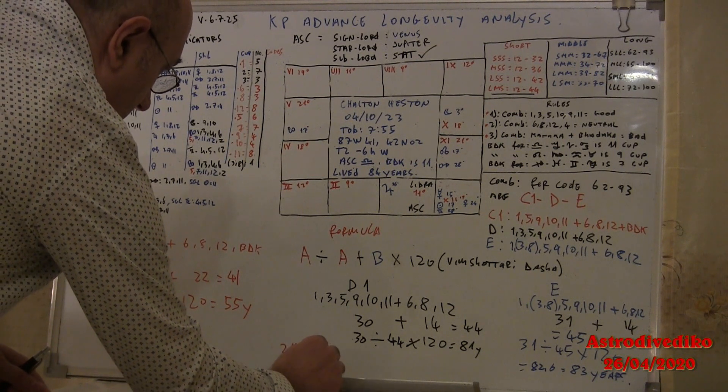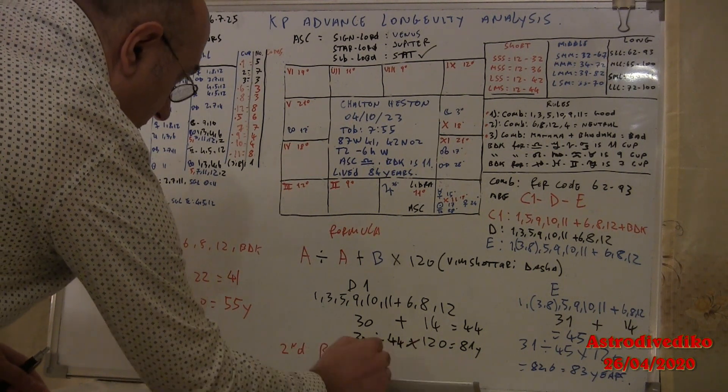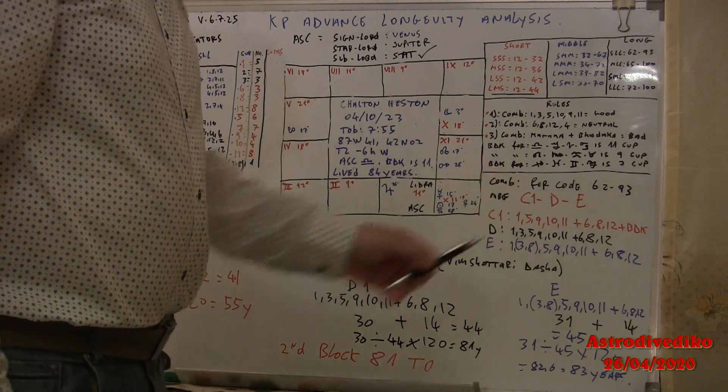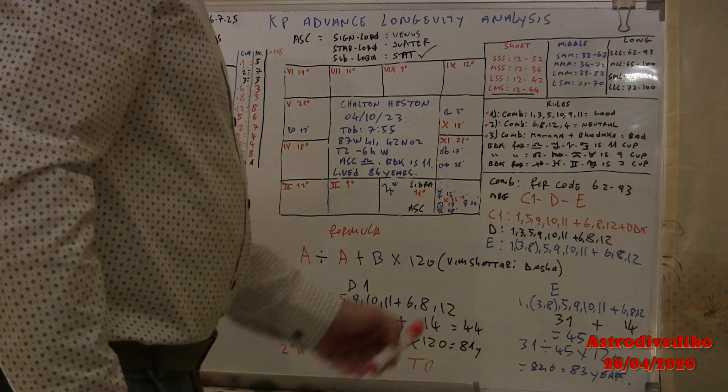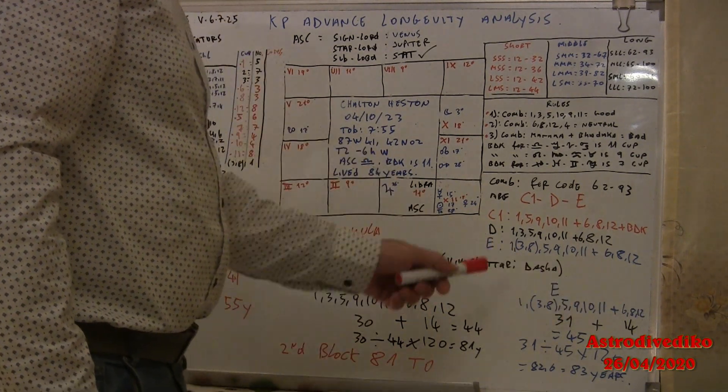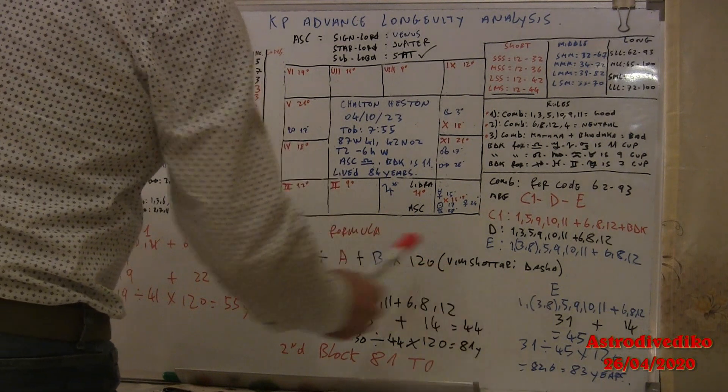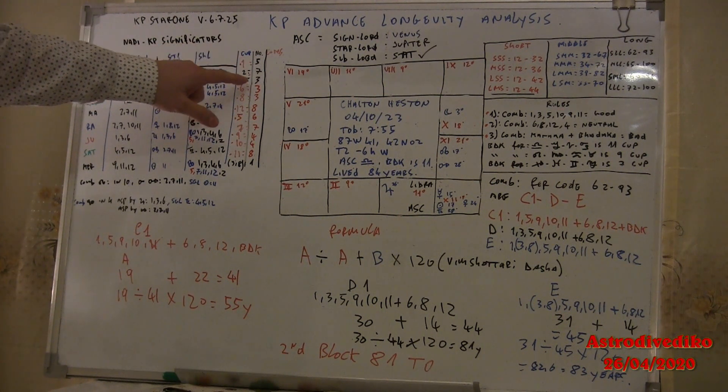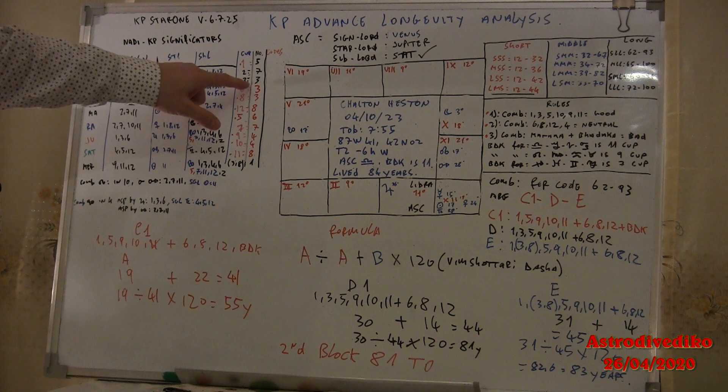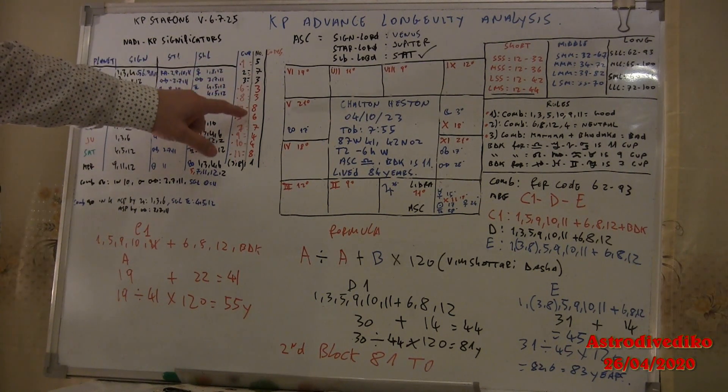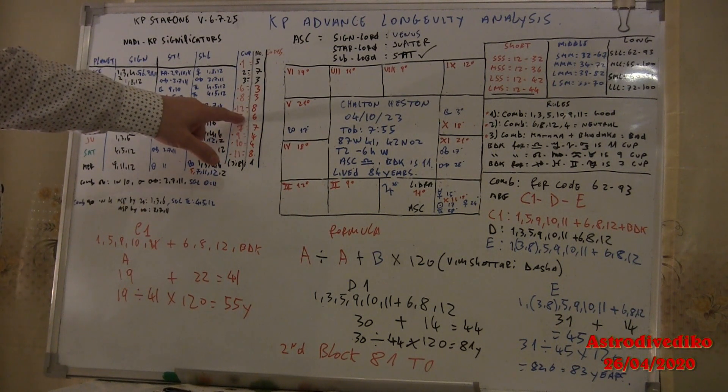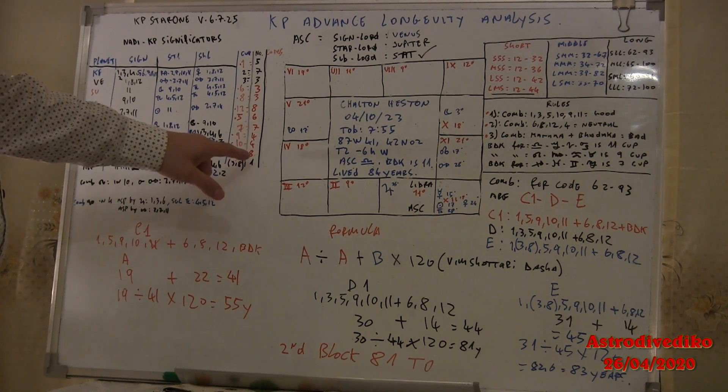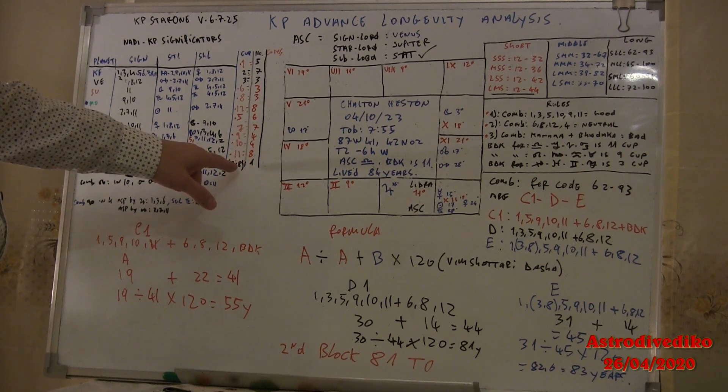Now we have to count combination E. E is 1, 3, 8, 5, 9, 10, 11 plus 6, 8, 12. Now when you calculate 1, 3, 8, you have to count: 1 is how many times? 1 is 5, 5 plus 3 is 3 times, so 3. 5 plus 3 is 8 plus 5 is 5, is 6 times plus 6 plus 4, 9 plus 4, 10 plus 8, 11 plus 1. 3, a combination. How do you get the 3A combination?